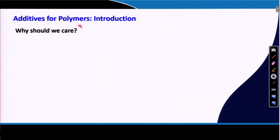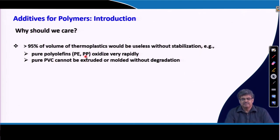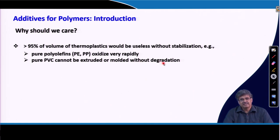Additives of polymers are very important. More than 95 percent of the volumes of thermoplastics will be useless without stabilization. For example, pure polyolefins like polyethylene and polypropylene oxidize very rapidly, so we require antioxidants to be added. Similarly, pure PVC cannot be extruded or molded because of poor thermal stability, so we require thermal stabilizers for effective processing.